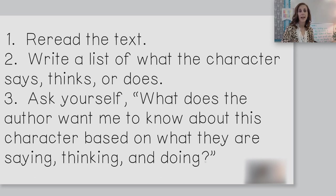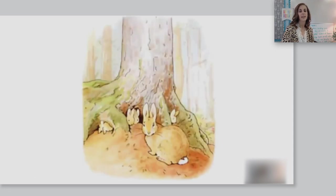We'll reread the text, write a list of what the character is saying, thinking, or doing, and then ask ourselves: what does the author want me to know about this character? Here we go. Once upon a time, there were four little rabbits and their names were Flopsy, Mopsy, Cottontail, and Peter. They lived with their mother in a sandbank underneath the root of a very big fir tree.